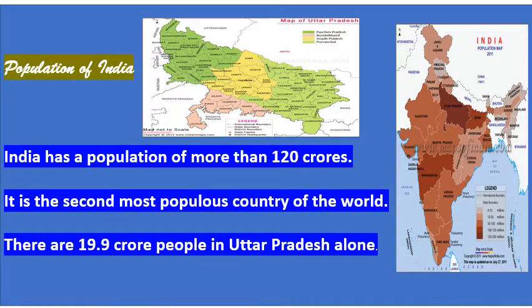Let us try to examine the population of India. India is the second most populous country in the world — China is the most populous. India has a population of more than 120 crore people as per the census of 2011. Uttar Pradesh has the highest population among the states of India, with 19.9 crore people.